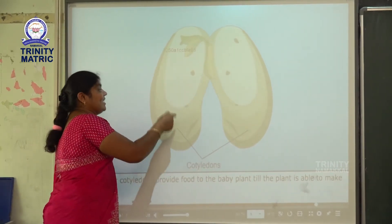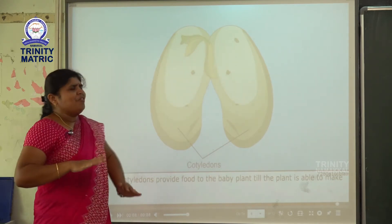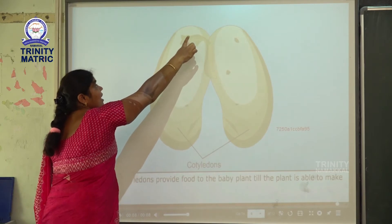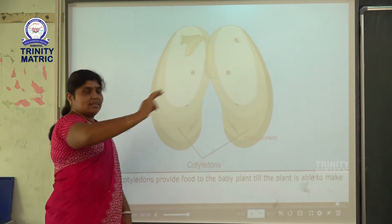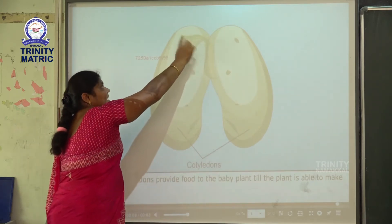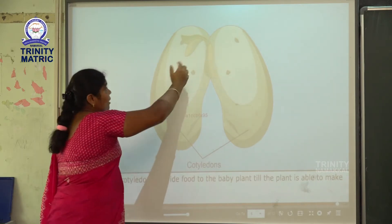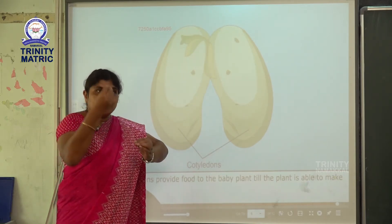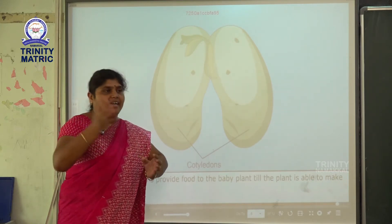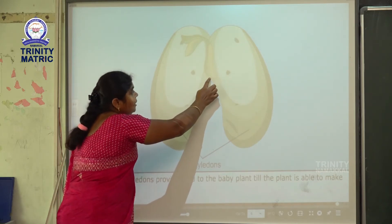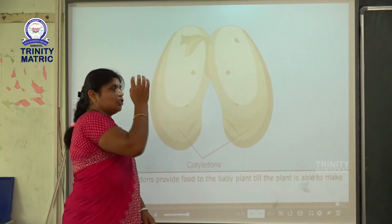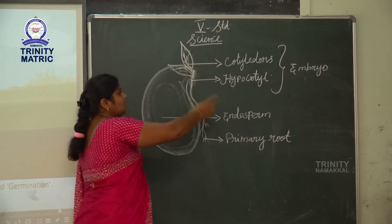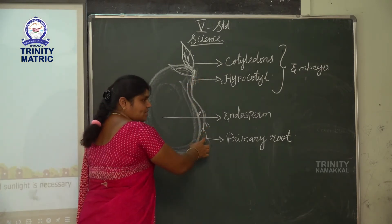The next and most important part of the seed is the embryo. Here, this is the embryo. The embryo has three parts: first one is cotyledon — cotyledon means leaves. Second one is hypocotyl — the hypocotyl produces the stem of the baby plant. The last part is the primary root. Now I show the picture — see the structure: the embryo has three parts: cotyledon, hypocotyl, and primary root.